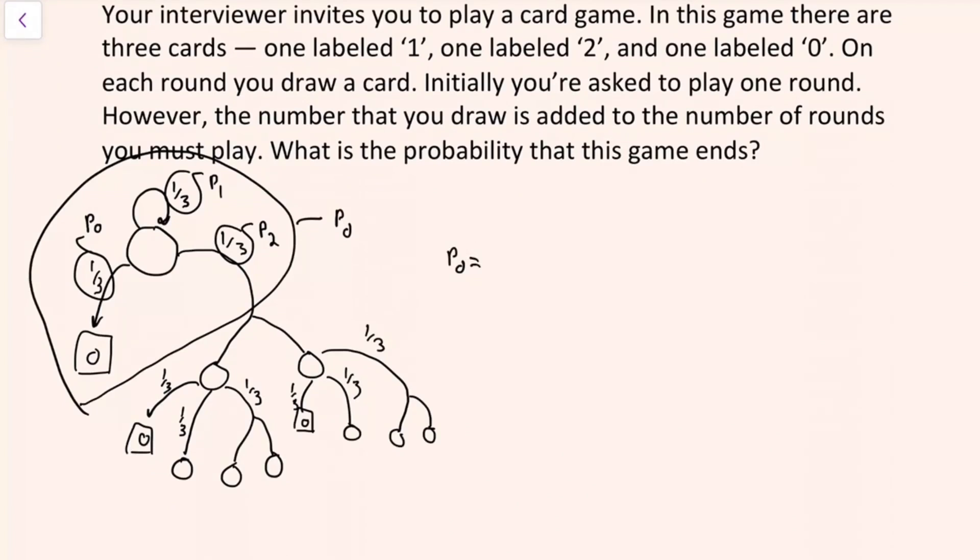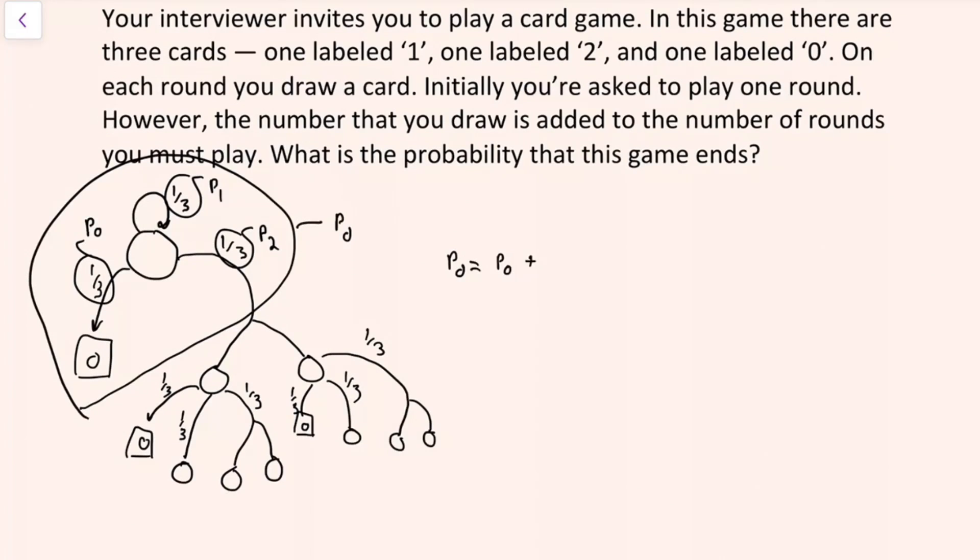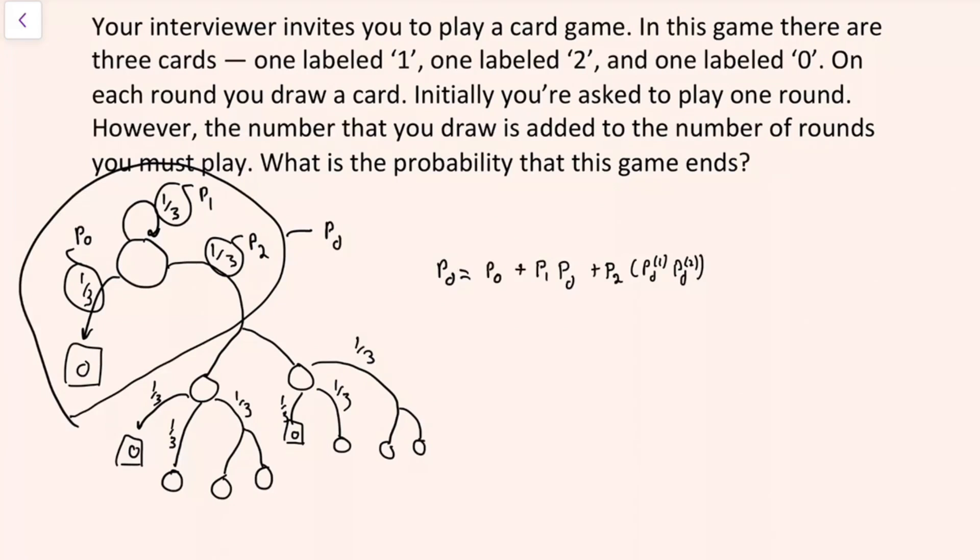From here, the game can end in three ways. You can pick the 0 card on the first round, and hence end the game immediately. Or you can pick the 1 card, in which case this game repeats itself. Or you could pick the 2 card, in which case there's now two copies of this game. But since the game is essentially the same, and since what we need is for the game to end in copy one and also in copy two, and since the two copies are independent, this term reduces to the square of the process itself.